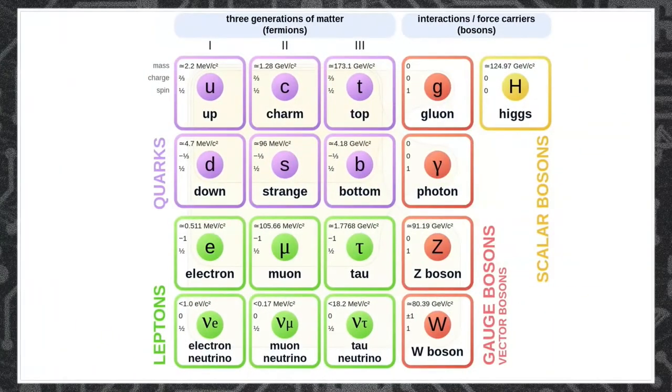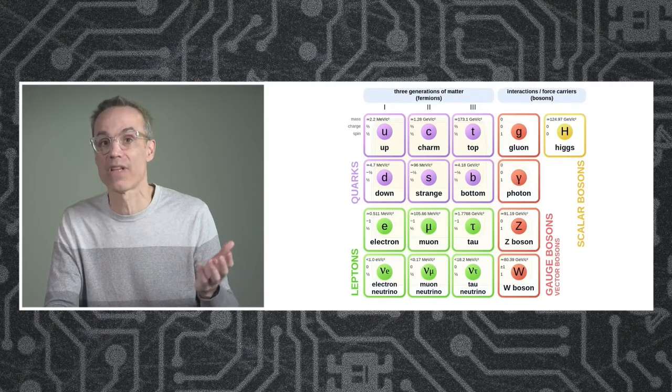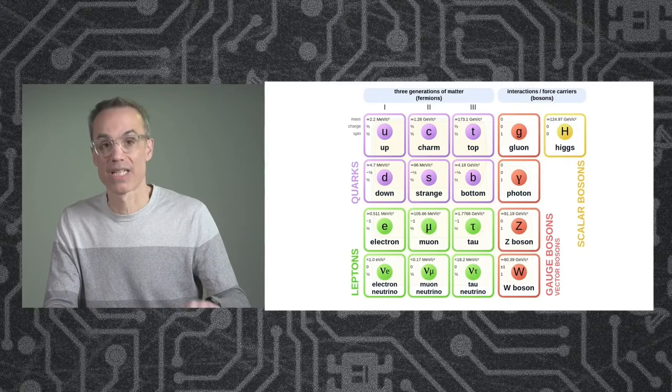As a result of all this is our standard model, the standard model of particle physics. What you're seeing here are the quarks and leptons and the force carriers and the Higgs boson that make up all the material that we know about in the universe around us. We have a very complete picture. We know almost everything about the material that makes up this table, this chair, this room that I'm sitting in.